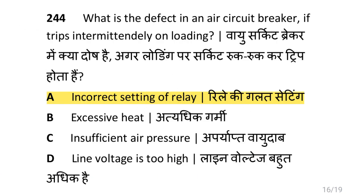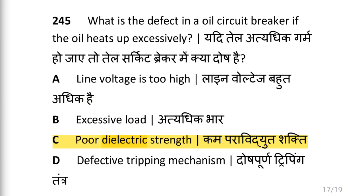What is the defect in an air circuit breaker if it trips intermittently on loading? That is an incorrect setting of the relay. What is the defect in an oil circuit breaker if the oil heats up excessively? That is poor dielectric strength. What is the cause of a phase-to-ground fault on the transmission line? That is insulation failure.